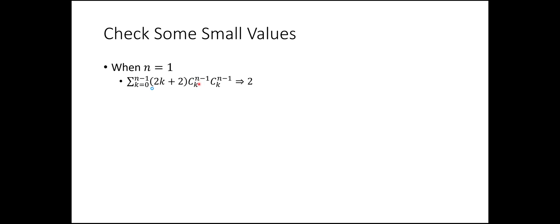The other term — the summation with k going from 1 to n-1 — when n=1, k goes from 1 to 0, so it contributes nothing, giving 0. The total is 2. The right-hand side when n=1 is (n+1)/2 times C(2n, n) = 1 times C(2,1) = 2. So the equality holds: 2 equals 2.